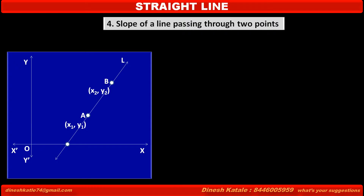This line L intersects the x-axis at a point, say C. This line L makes an angle theta with the positive direction of the x-axis.